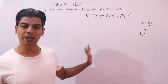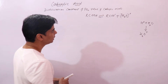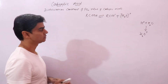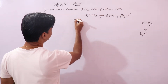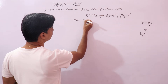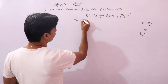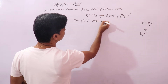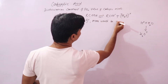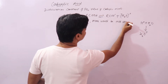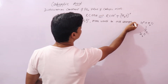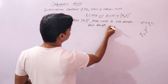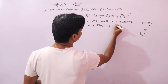When the reaction attains equilibrium, we apply the law of mass action. More are the number of hydronium ions, more would be the acid strength. So acid strength is directly proportional to hydronium ion concentration.